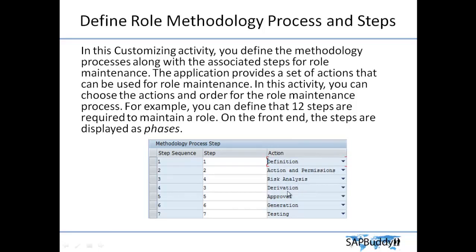The role maintenance steps include defining action and permission, risk analysis, derivation, approval, generation, and testing. Along with this process, you can define the methodology. The application provides a set of actions for role maintenance — all provided by SAP — and in this activity you can choose the action and order of the role maintenance process. For example, you might want to have 12 different steps for role maintenance.